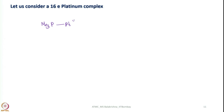Let us consider a simple 16-electron count platinum complex and see how an oxidative addition reaction happens. Here platinum is in zero oxidation state because all are neutral ligands, it is a D10 system, coordination number is 3, and electron count is 16 (10 plus 6). It is better to write down all these points when you perform a reaction so that understanding would be much better.